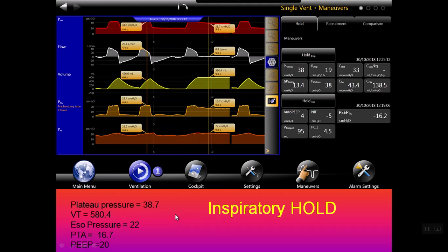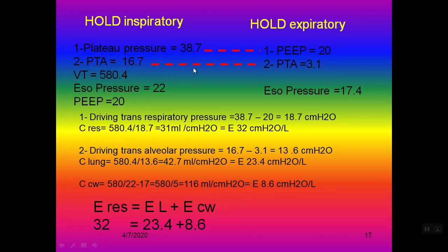Then we come to the inspiratory hold for 3 to 5 seconds. This gives us the plateau pressure and tidal volume with no flow. We measure trans-alveolar pressure during inspiration and esophageal pressure during inspiration. These are the data from the expiratory hold — PEEP, trans-alveolar pressure during expiration — and the data from the inspiratory hold: plateau pressure, trans-alveolar pressure during inspiration, and esophageal pressure during inspiration.